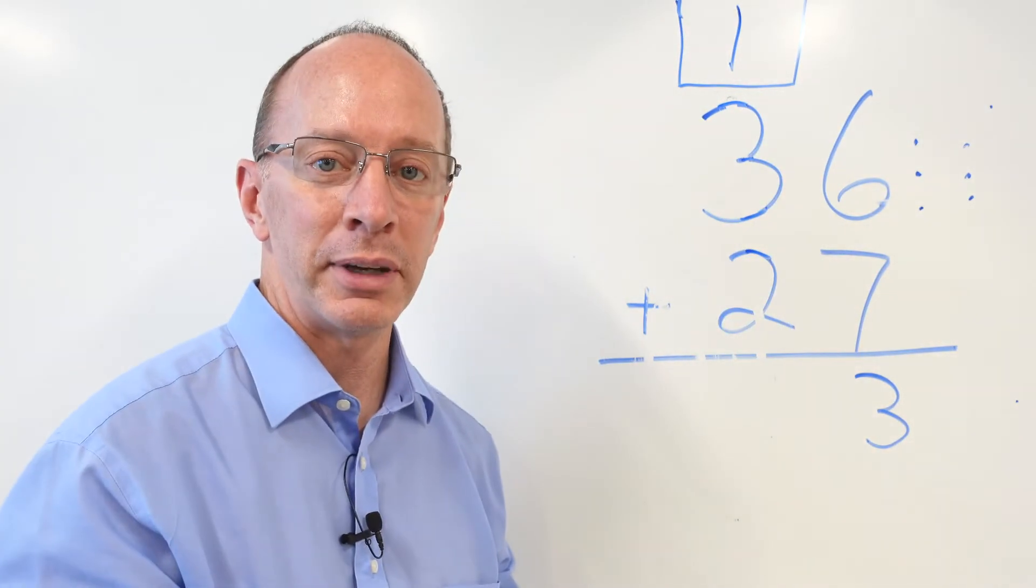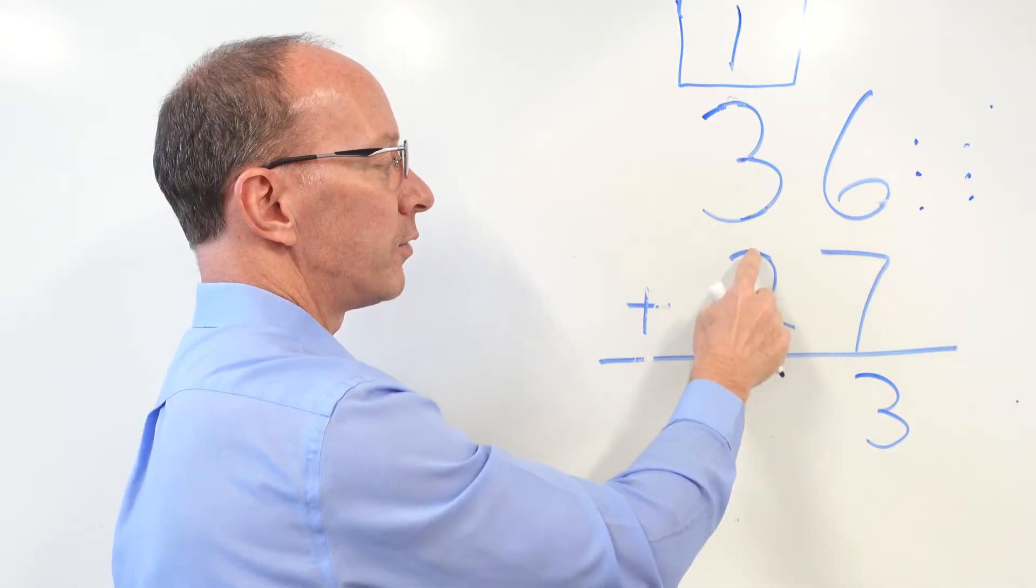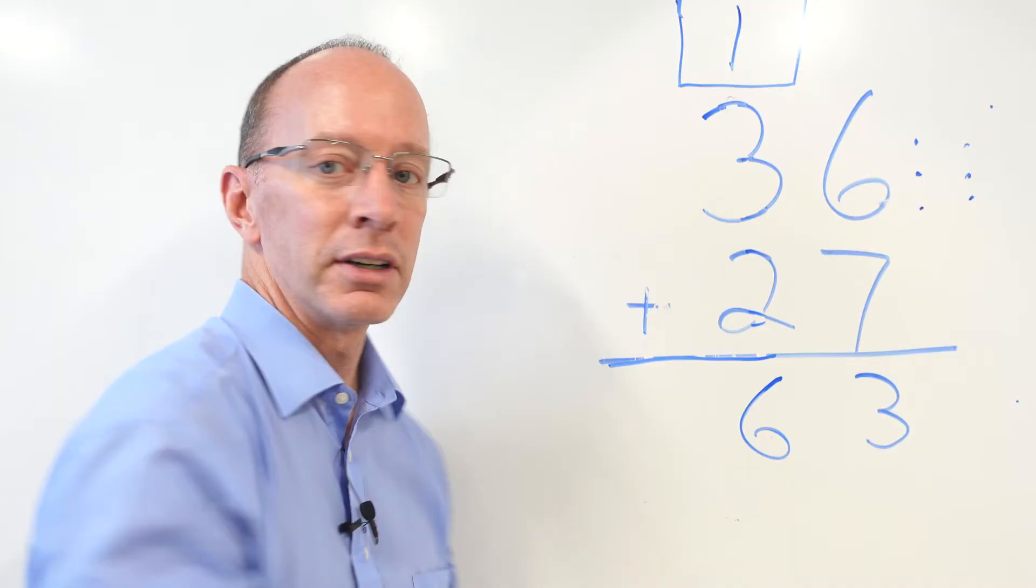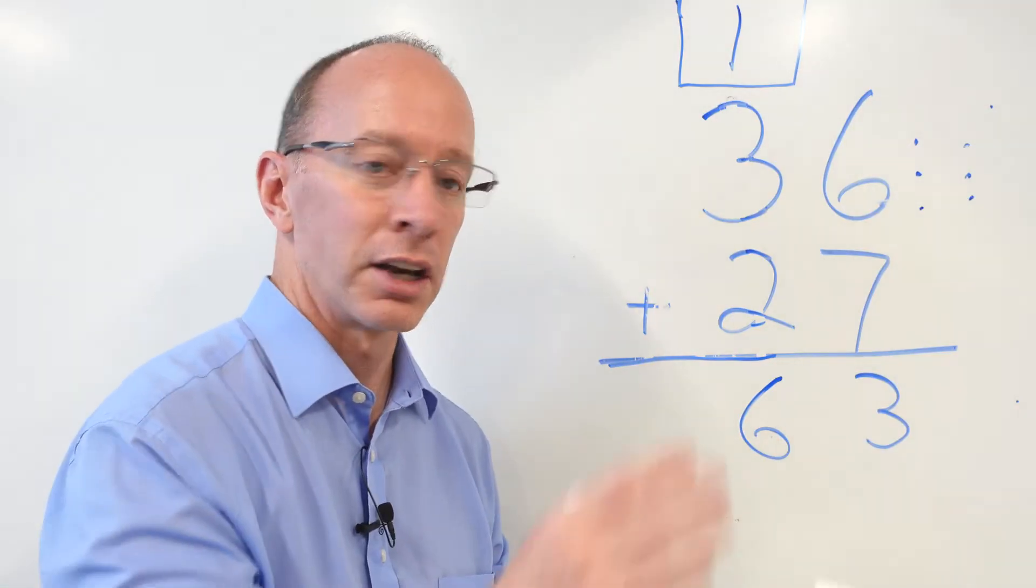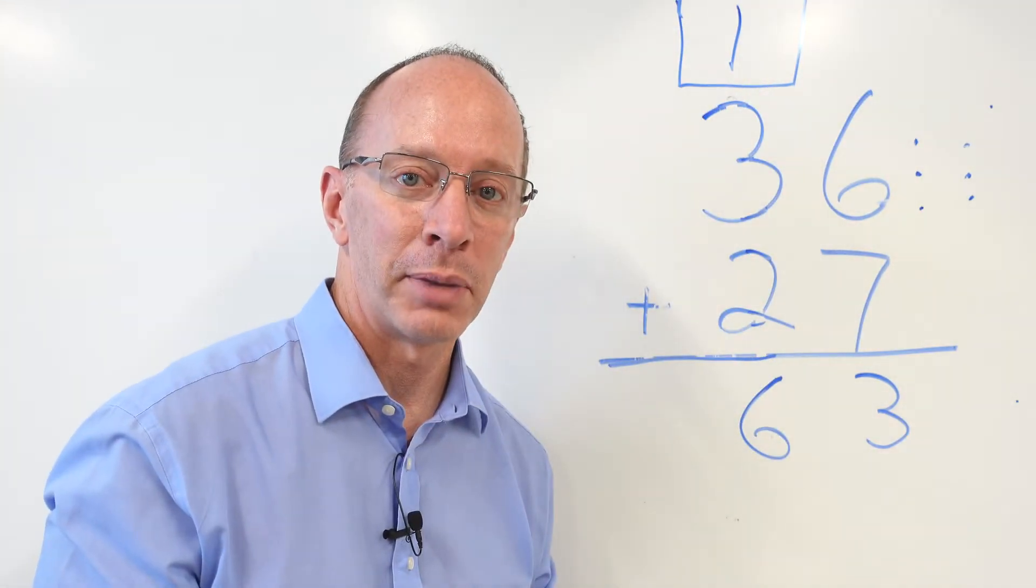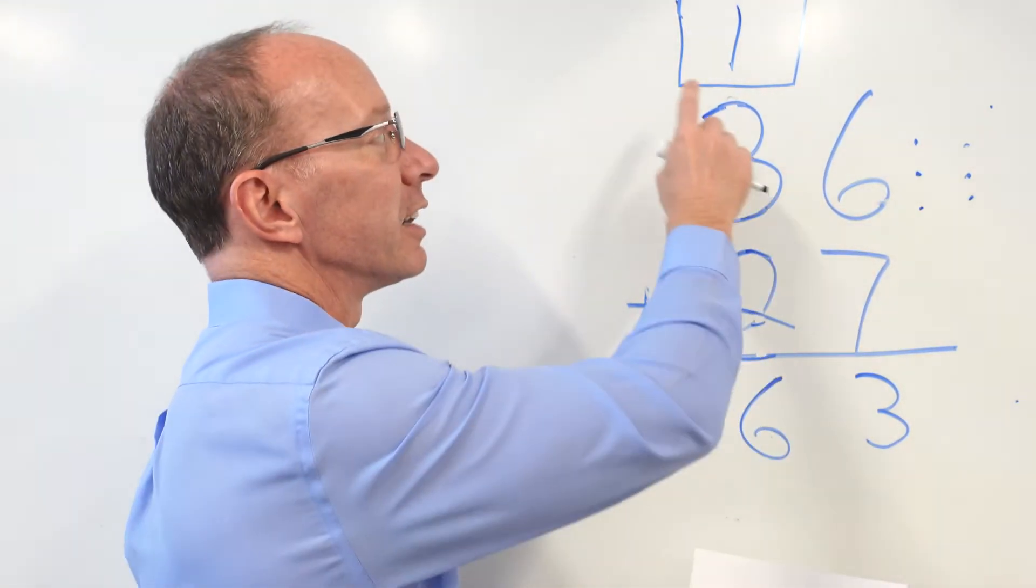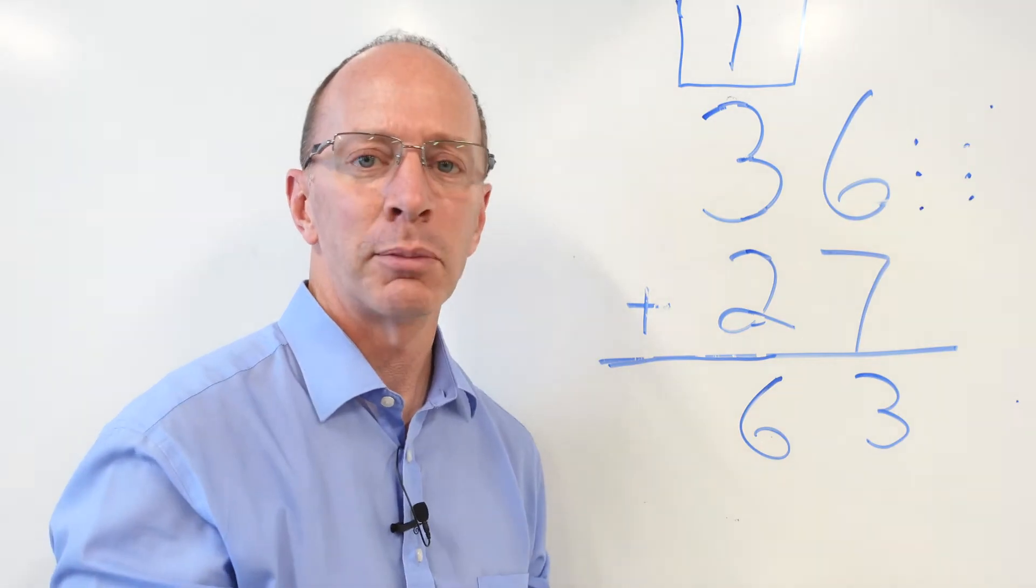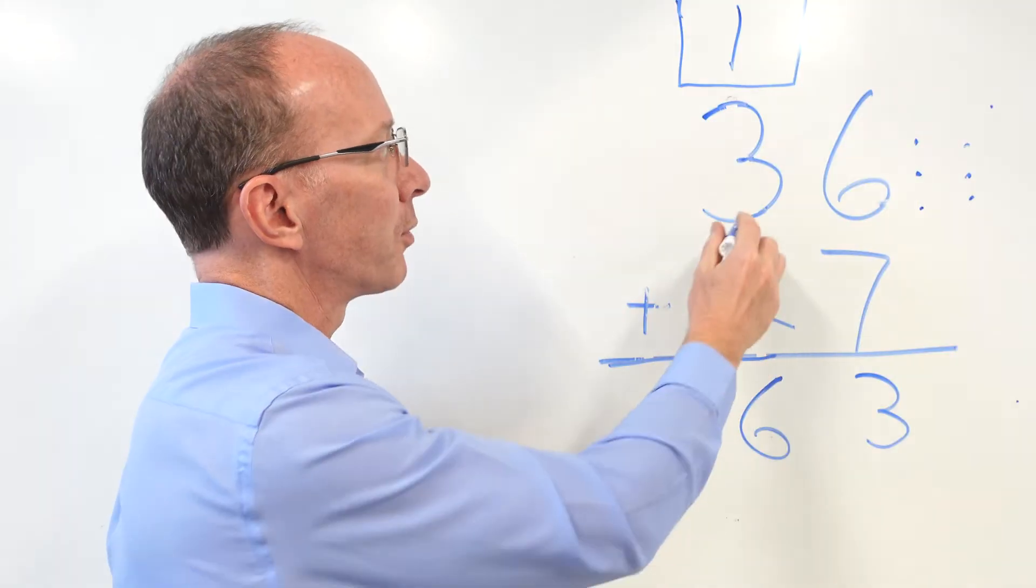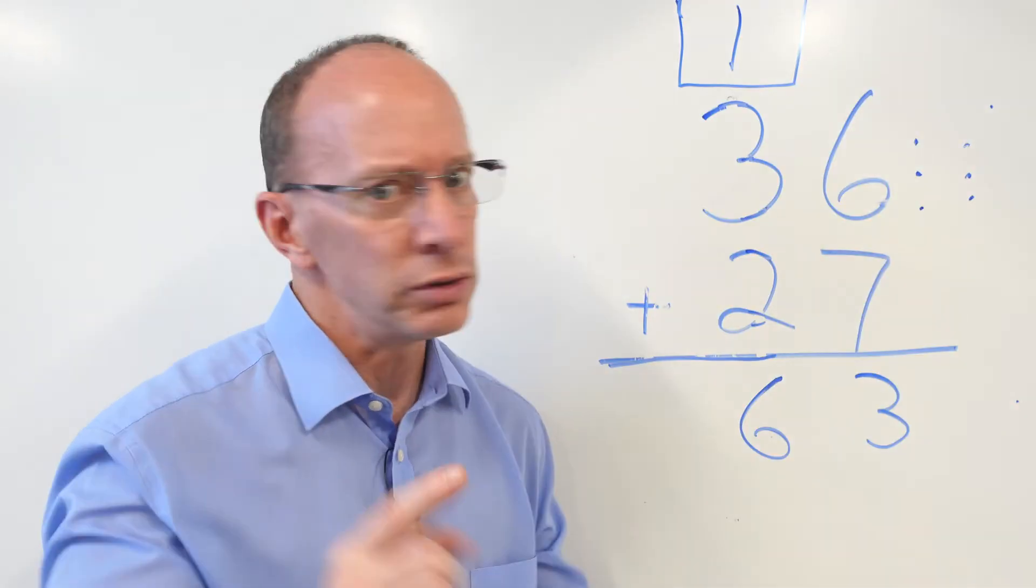So now our next step is to add the tens. So let's go ahead and do that. We have three, four, five, six. Now, sometimes when we're first beginning to learn how to do double-digit addition, we forget about adding that number up there in the box. That box right here represents a placeholder. So later on, you won't have to have a box like that. But for a couple problems, we'll use that box. So we added up three, four, five, six. So our answer is 36 plus 27 is 63. All right, let's do another problem.